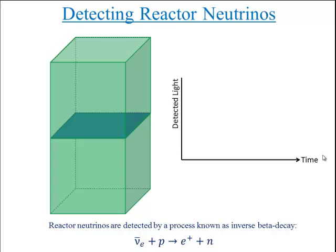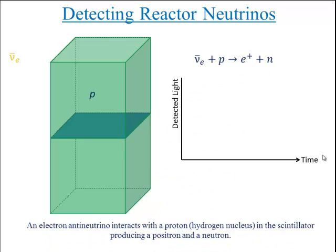Reactor neutrinos are detected by a process known as inverse beta decay. An electron antineutrino interacts with a proton in the scintillator producing a positron and a neutron.